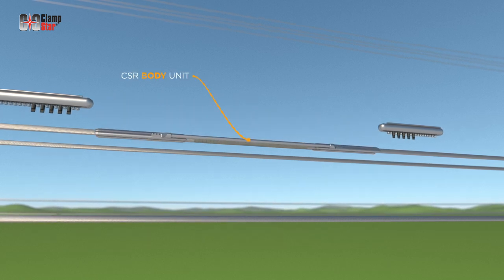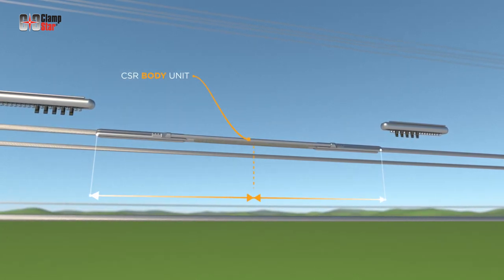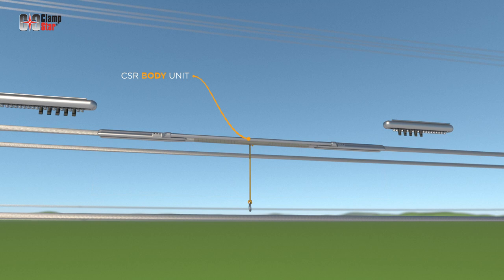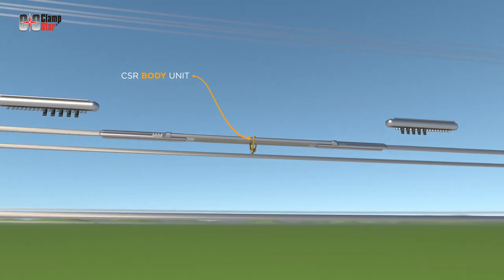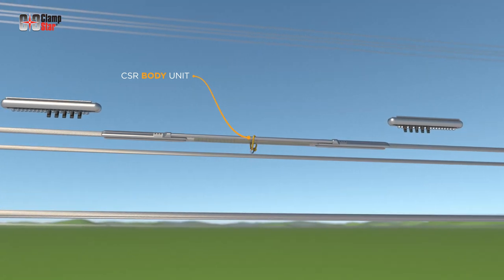Place the ClamStar body on top of the conductor with the splice centered between the left and right side of the unit. If necessary, tie a safety rope around the unit and conductor.